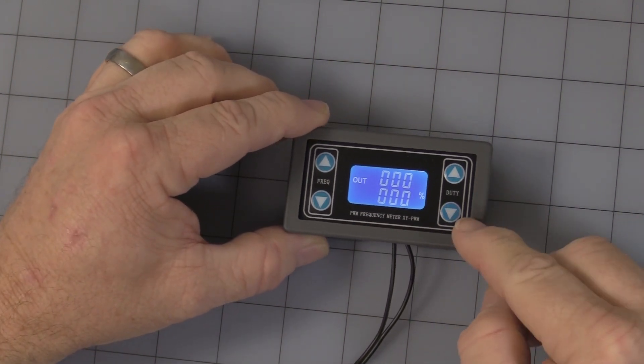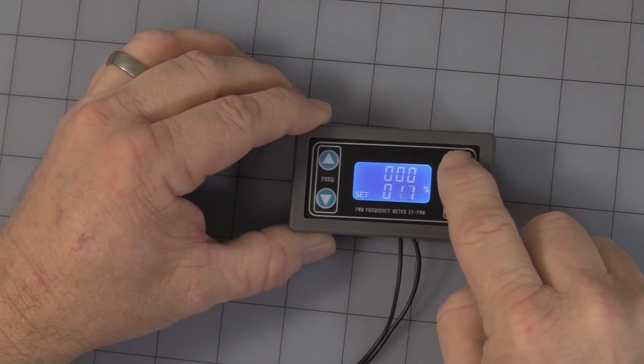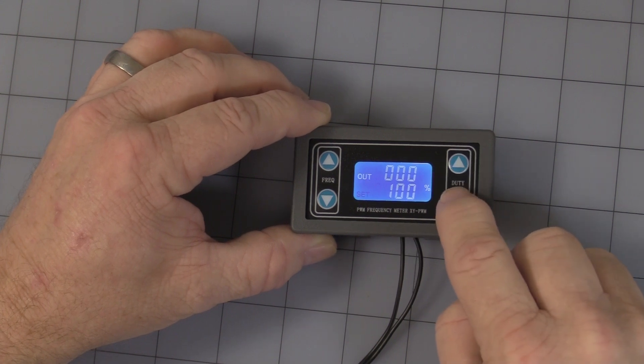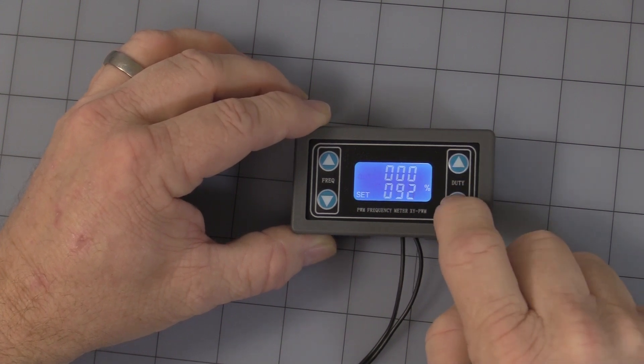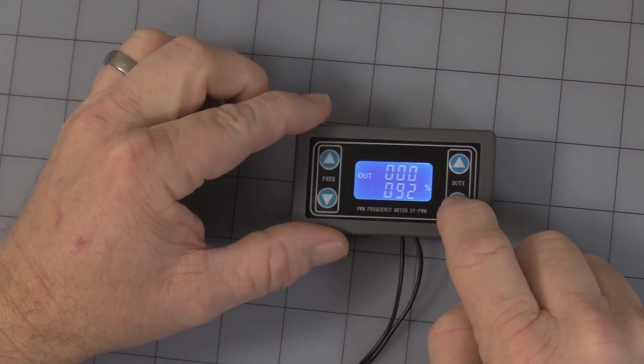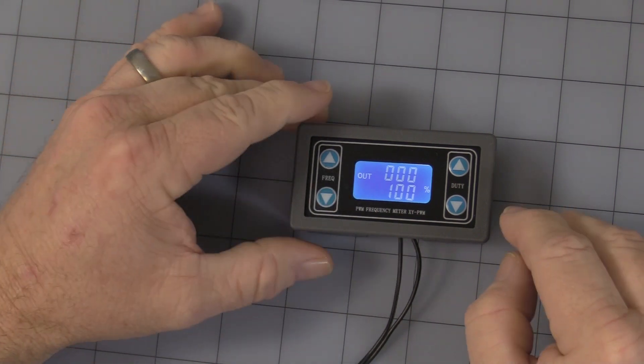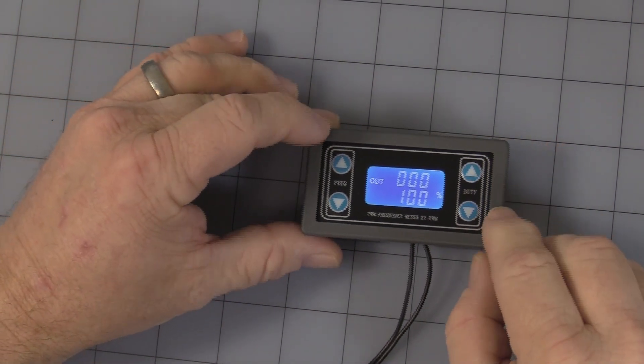You have on the right hand side an up and down arrow that says duty, and that will actually allow you to control what the duty cycle is. You'll notice here it says out, that's what the actual output is, and when you start to change it, it switches over to set, then it automatically changes back to output. That's the duty cycle.